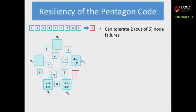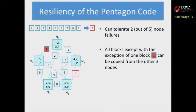The Pentagon Code can tolerate any two node erasures. For example, if nodes N1 and N5 have been erased, we observe that apart from the block common to both nodes, all other blocks have a copy in the remaining nodes and can simply be copied. Because there is a parity, we can recover the one remaining block using that parity. So this code can tolerate any two out of five node erasures.